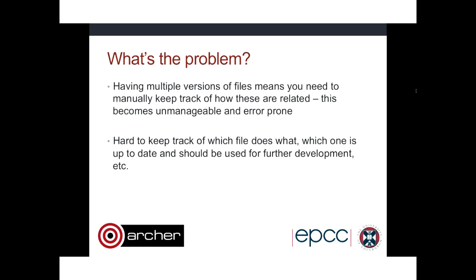One way people get around the problem of multiple versions is by giving files intricate names — overloading the file name with all the information. Typically you'll have file names with the date, sources, data, and the new feature implemented. Then you have another version called 'latest', and another called 'latest latest', and another called 'doesn't work', 'try', 'test', and so on.